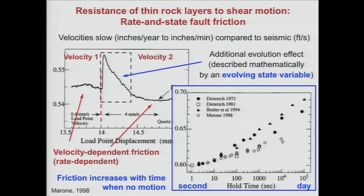If you've ever tried to move an object like a jar in the kitchen and it gets stuck, sometimes it's this strengthening of friction with time, especially if it was sitting there for years. We also see that friction increases with time when there is no motion. Scientists have been able to link this behavior to that same evolving state variable, which is why this law has just rate and state dependence in it. I could show you the equations — I personally think they're beautiful — but I'm not going to do that.